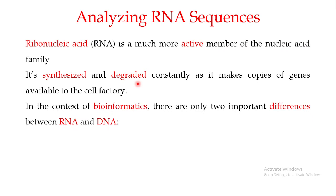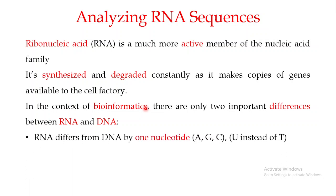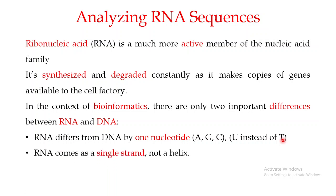In the context of bioinformatics there are only two important differences between RNA and DNA. The first difference is that RNA differs from DNA by one nucleotide — in both DNA and RNA you find adenine, guanine, and cytosine, but in RNA you find uracil instead of thymine. The second important difference is that RNA usually comes as a single strand and not as the double helix you see in the DNA molecule.